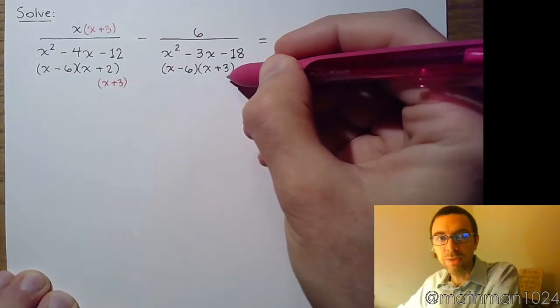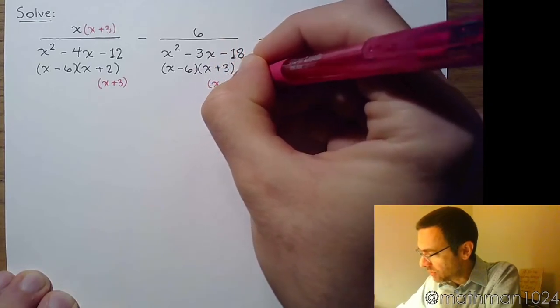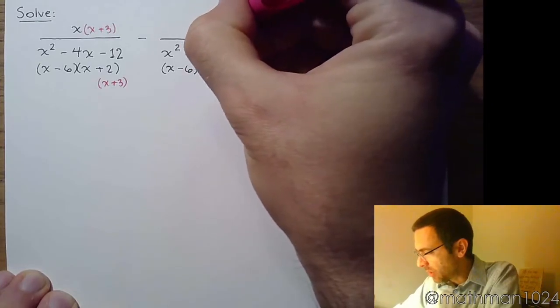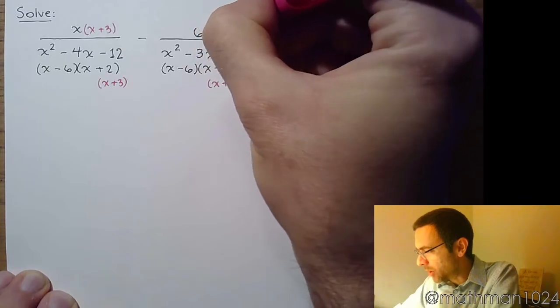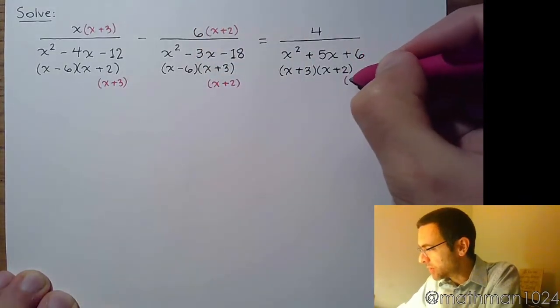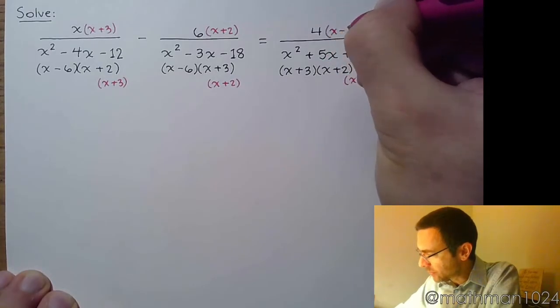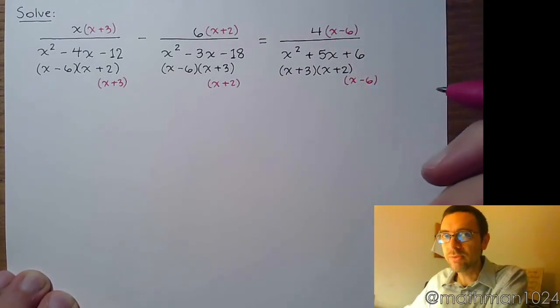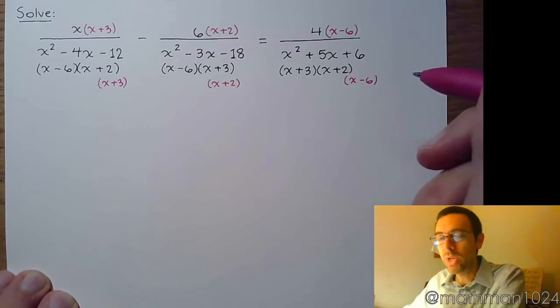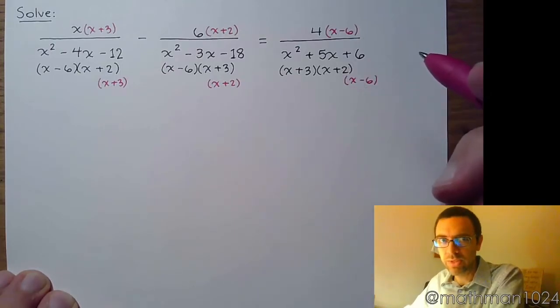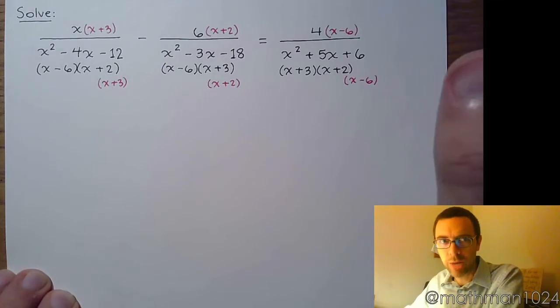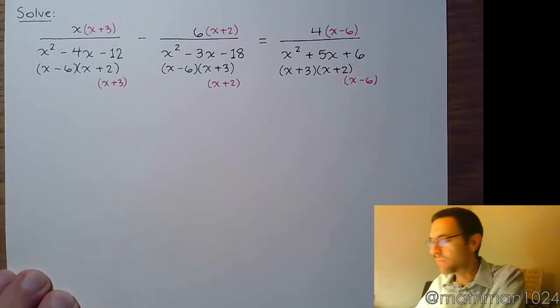You put that missing factor in the denominator and the numerator. For the fraction in the middle, he is missing the factor x plus 2. And the last one is missing the factor x minus 6. Now since everybody has the exact same set of factors for the denominator, we can now ignore those guys and just write our equation from the numerators.